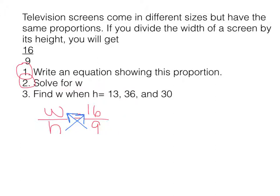Hopefully you saw that 9 times w should have given you 9w, and then h times 16 is 16h. So what we would do next to solve for w is isolate the variable. Since 9 is multiplying w, the inverse is to divide. These cancel, and we are left with w is equal to 16 times h divided by 9.